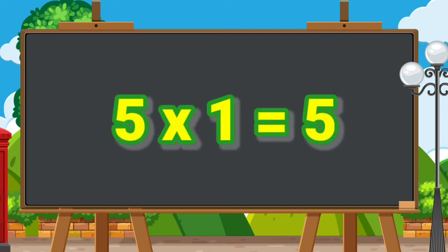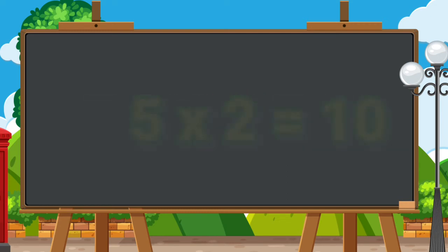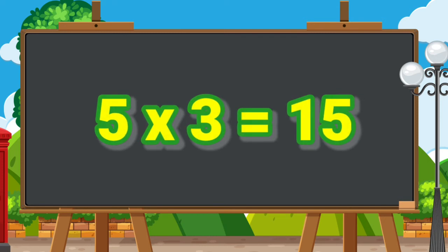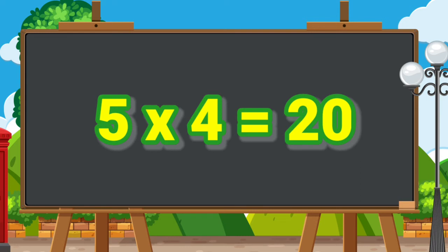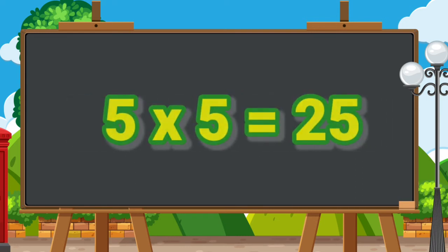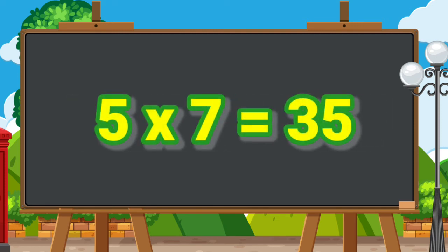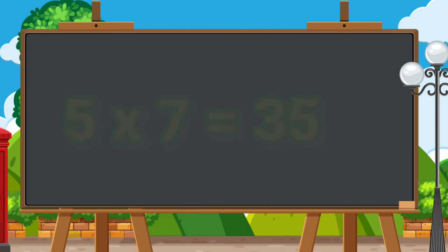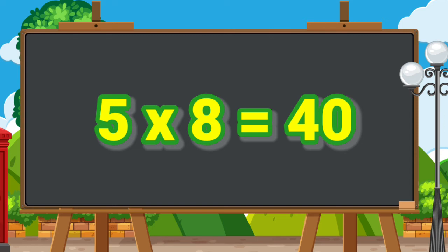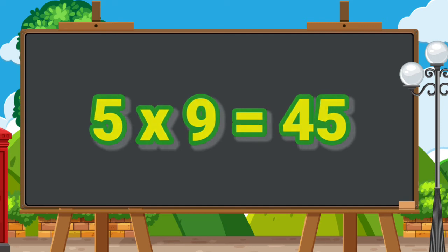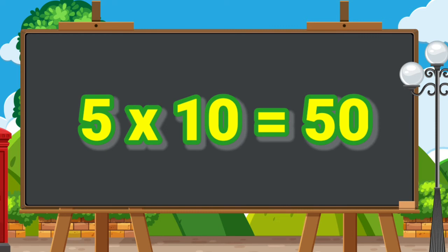5 ones are 5. 5 twos are 10. 5 threes are 15. 5 fours are 20. 5 fives are 25. 5 sixes are 30. 5 sevens are 35. 5 eights are 40. 5 nines are 45. 5 tens are 50. Let's sing the table one more time.